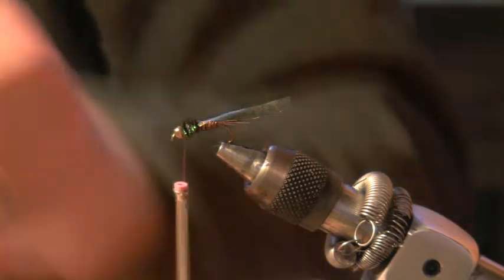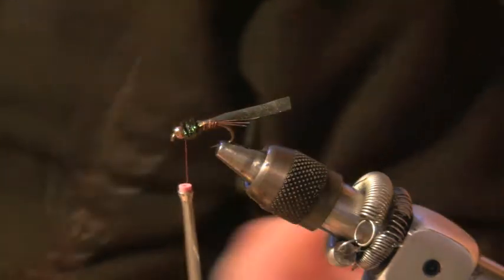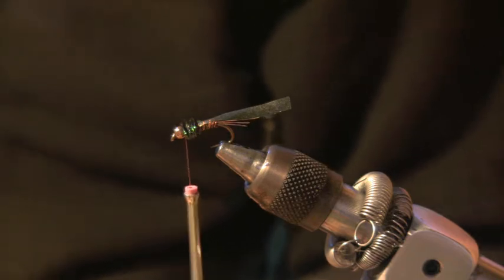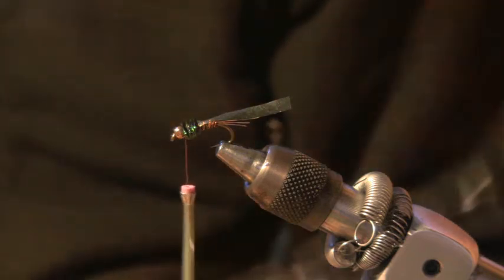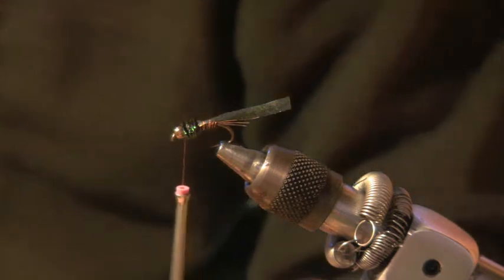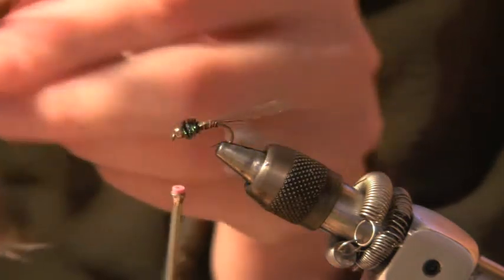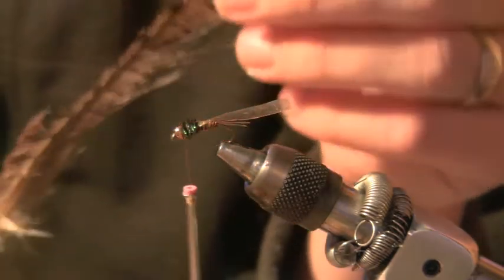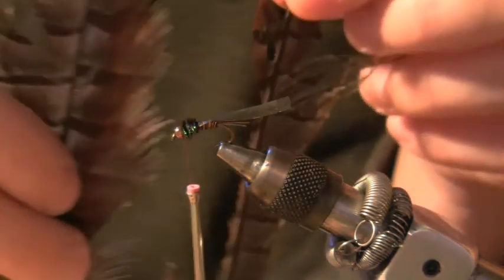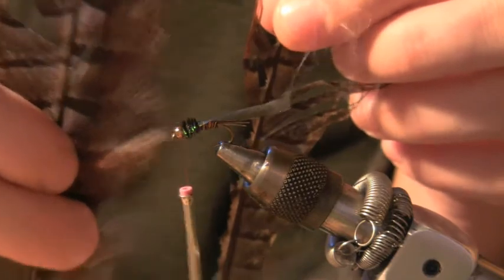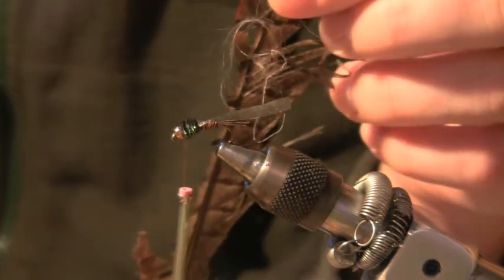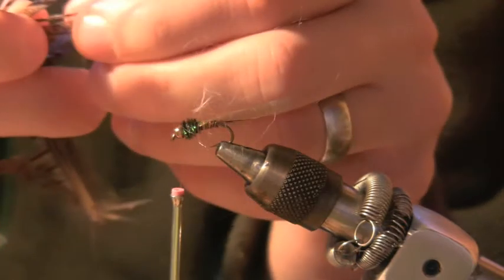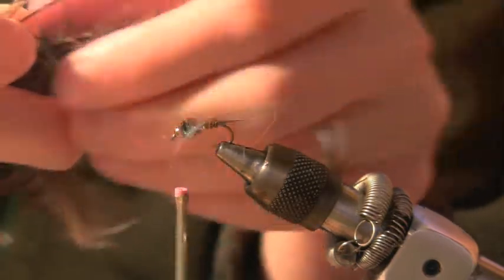And now I'm going to add some legs. I like to have some legs off my fly. And so what I'm going to do is get some pheasant tail. And I'm going to use one of these shorter pieces. Because I try to use the longer pheasant tail for wrapping. And these I'll use the smaller pieces for the legs, or smaller flies.